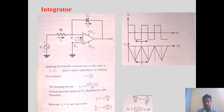Now we need to write the expression for V0. If we separate V0, this derivative becomes an integral when taken to the right side, and 1/RC is a constant. That is why the expression for V0 is: V0 = −(1/RC) ∫ VI dT.